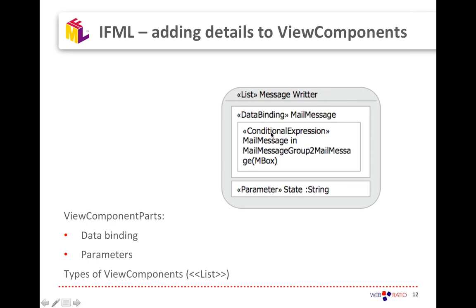Together with data binding, you can add a conditional expression as an additional component part. In this example we are showing a list of mail messages where the conditional expression specifies that the mail message shown must be in a particular relation. Similarly, you can define other view component parts like parameters — a parameter state shown as a component part that can be the target for some parameter binding for incoming information.